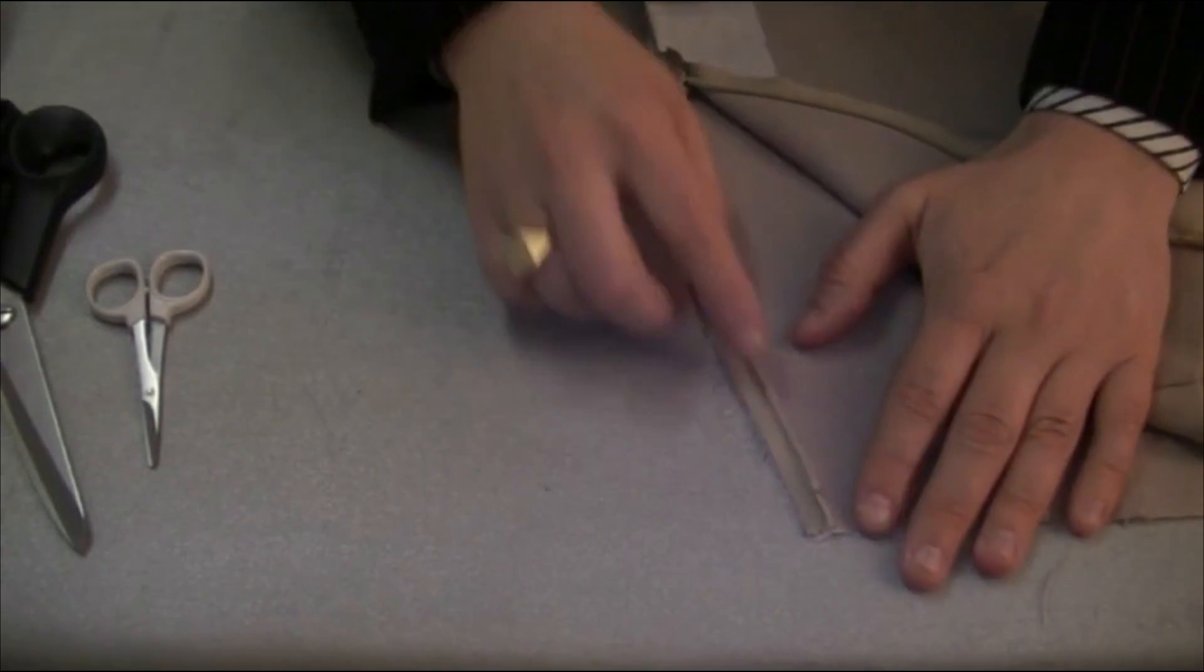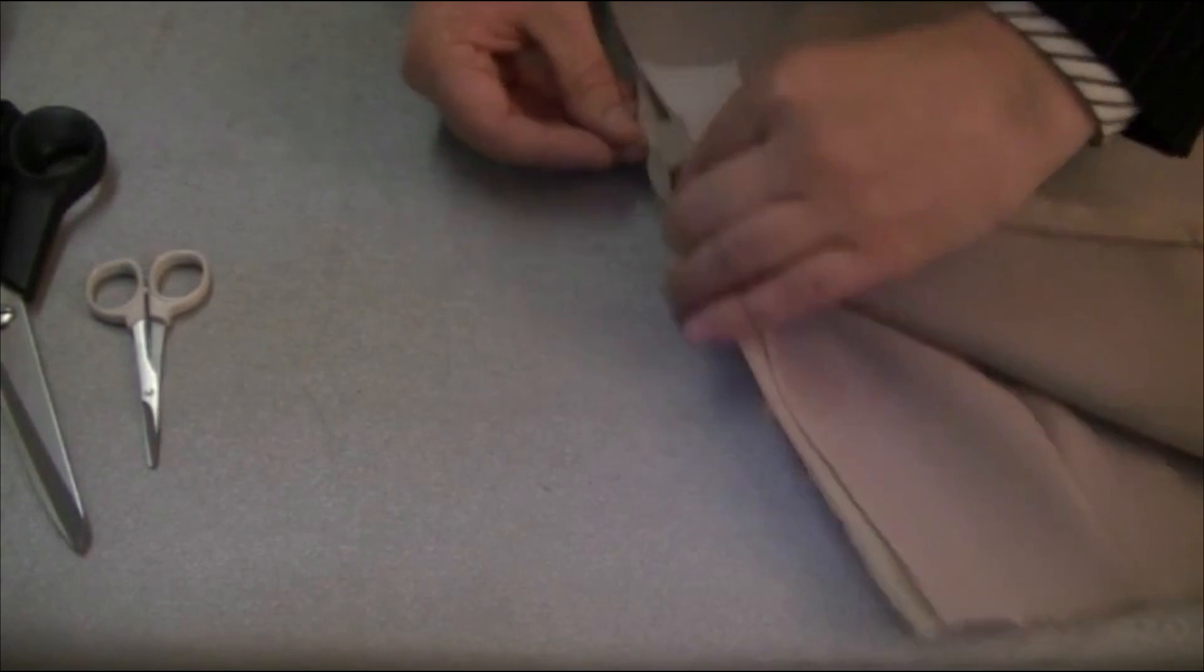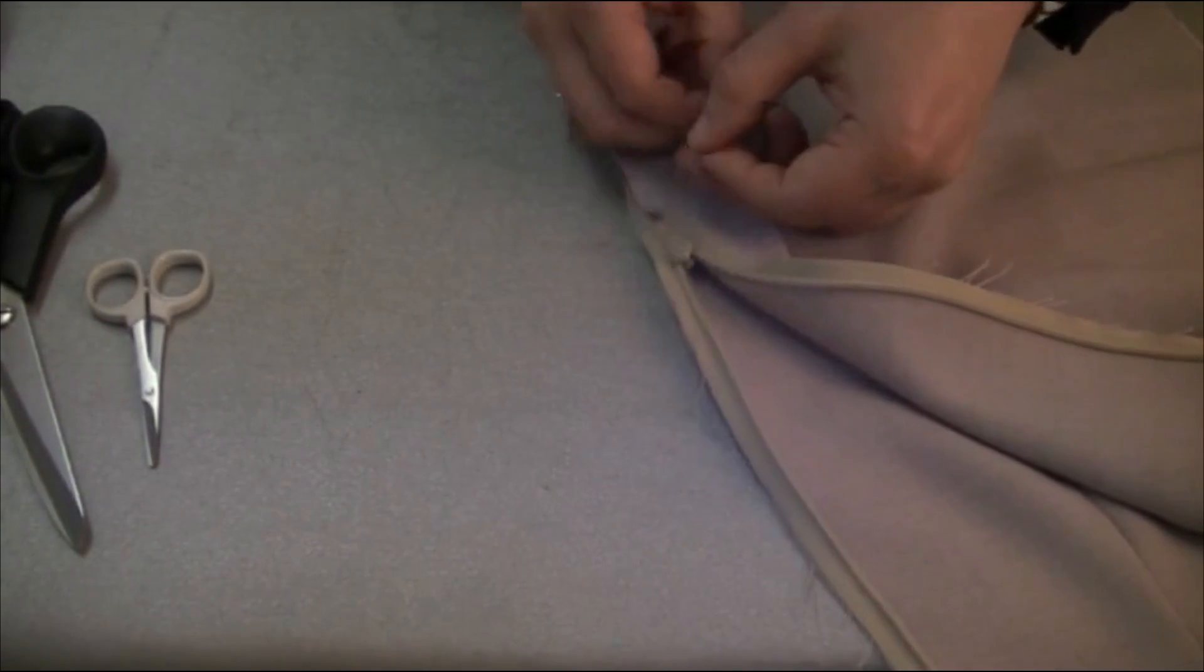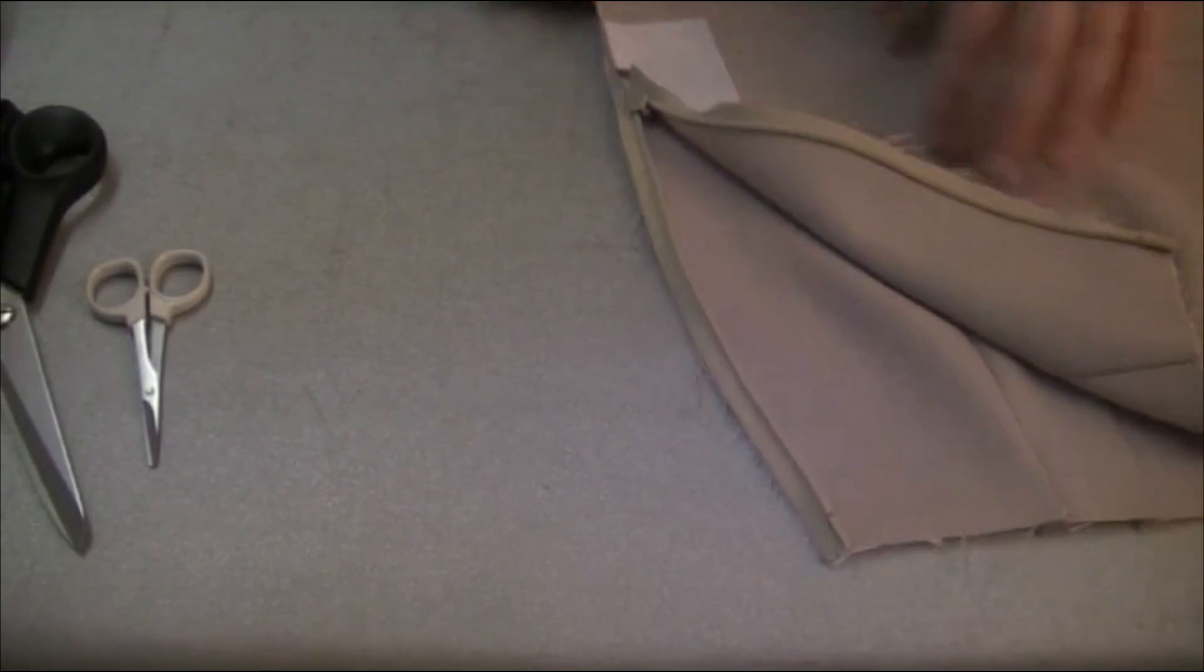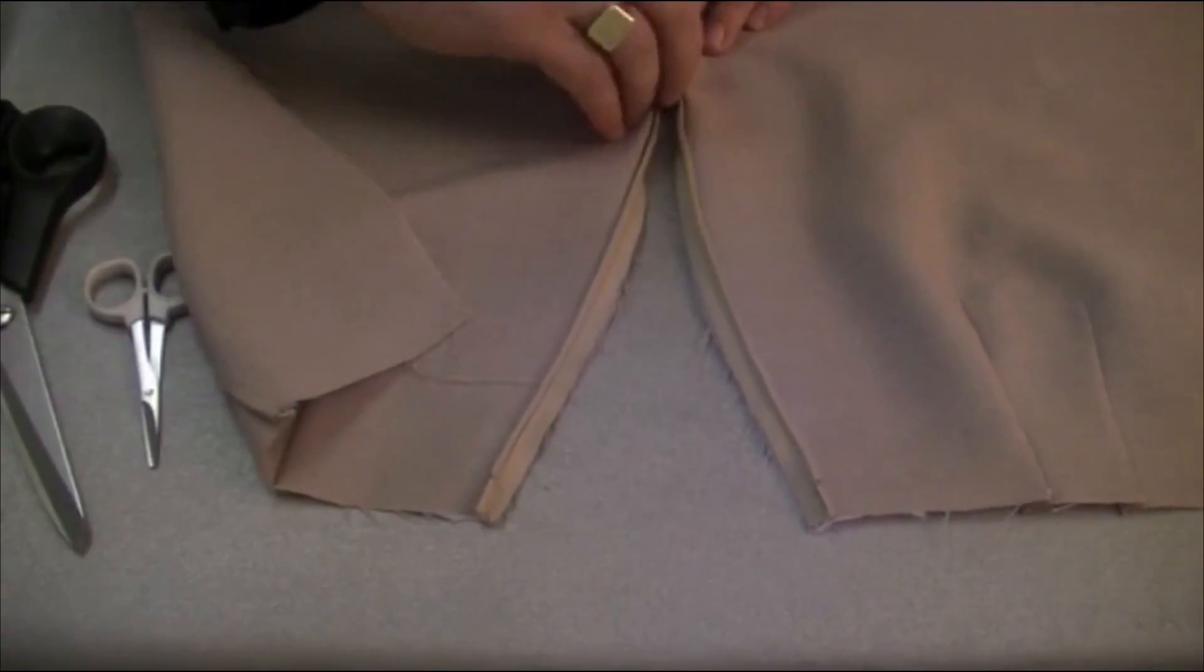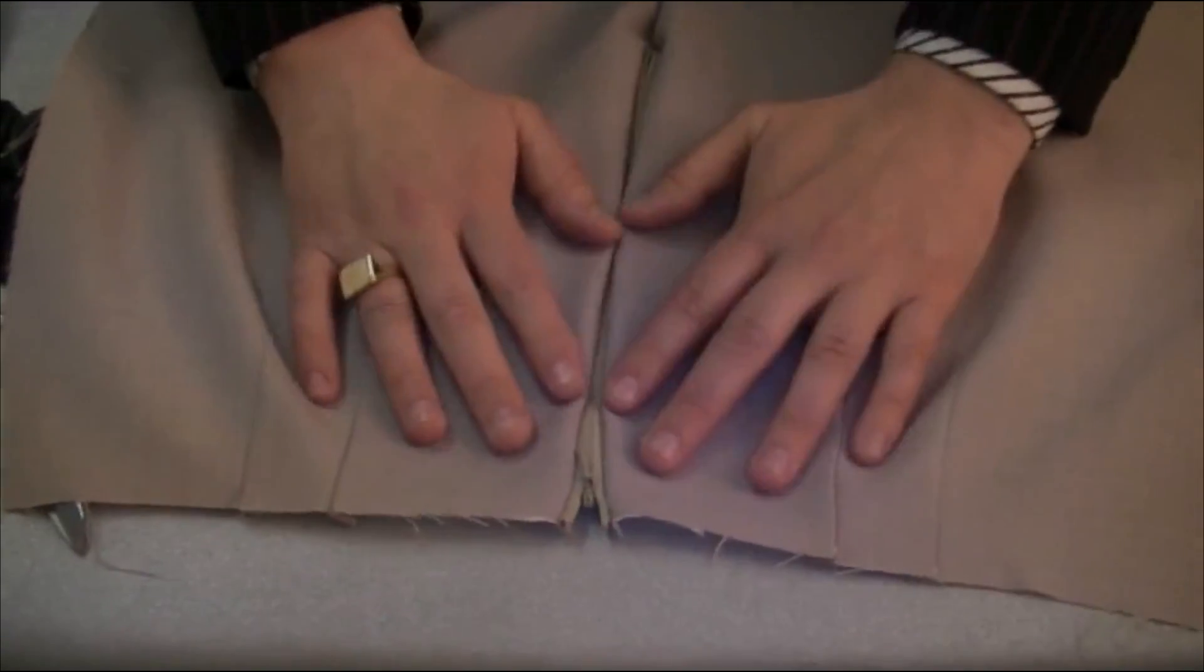Okay, so what we've done is we've attached the zip in as the first stage and again I've left the strands here of the thread so that I can take these original stitches out when we've done the second part. So as you can see, this zip now is starting to form as a concealed zip.